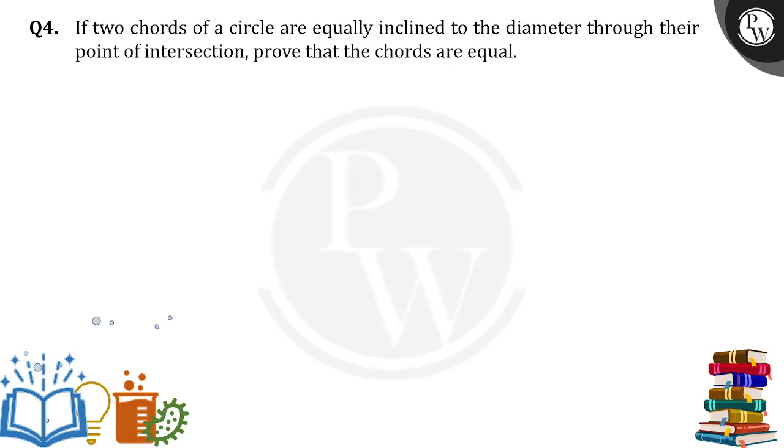Okay, let's suppose a circle. This circle has a diameter. If this is diameter AB, now there are two chords which are equally inclined to the diameter through their point of intersection. Let's suppose they are meeting at point A. Let's suppose chord AC and AD.